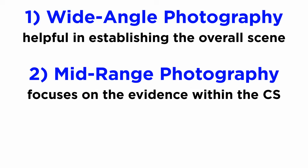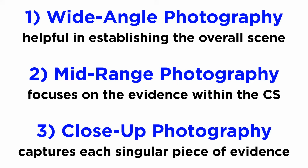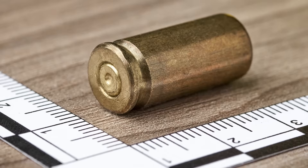Next in the sequence is mid-range photography, which is used to focus on the evidence located within the overall CS. Then close-up photographs of each piece of evidence are taken from all sides. The rule of thumb is to capture the evidence in such a way that it totally fills the camera frame. This helps in recording every detail of the evidence, such as its surface characteristics, markings, and defects.